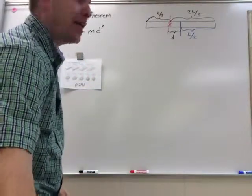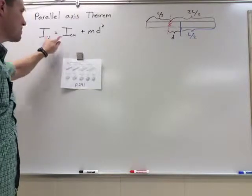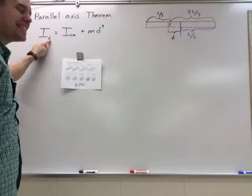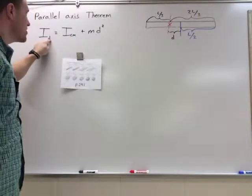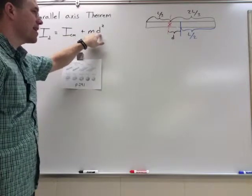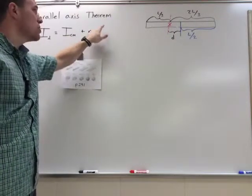We have the parallel axis theorem, which tells us that the moment of inertia about any axis parallel to the center of mass axis, some distance d away, is going to be equal to the center of mass moment of inertia plus the mass times the separation distance of those two parallel axes squared.